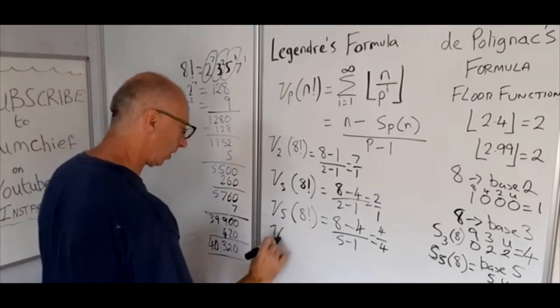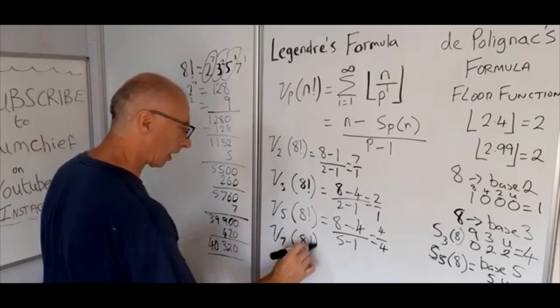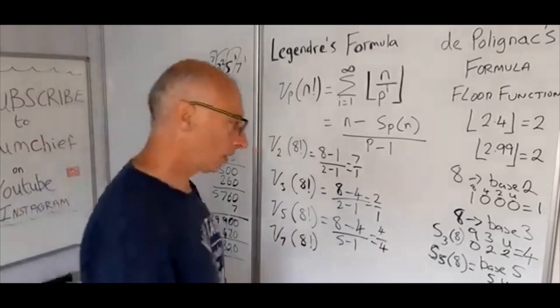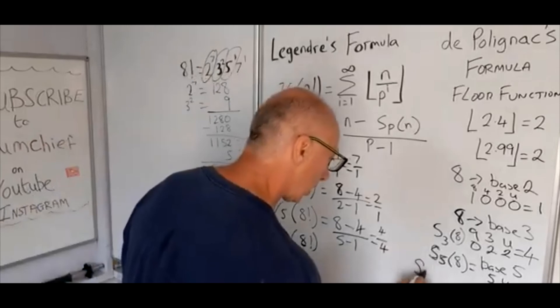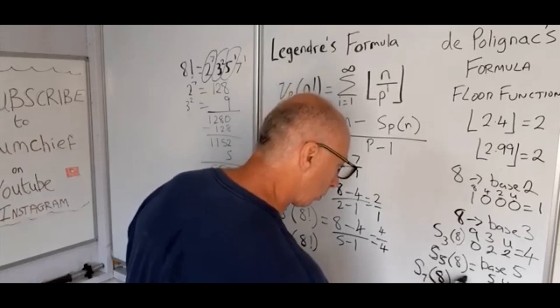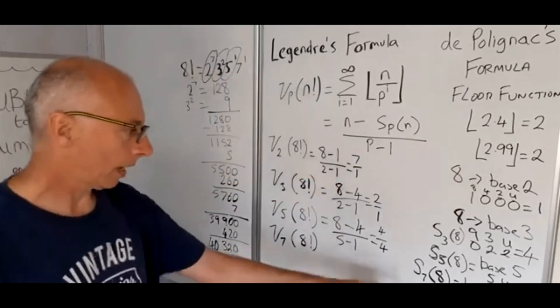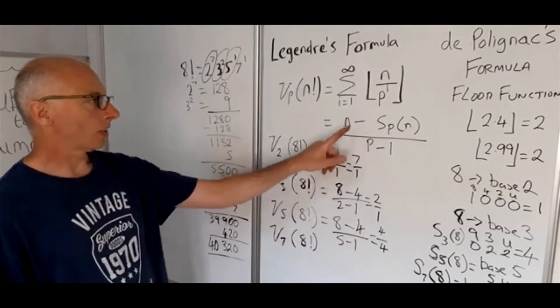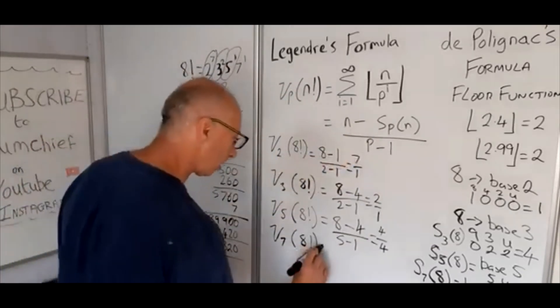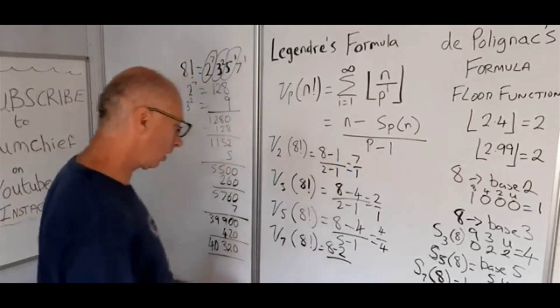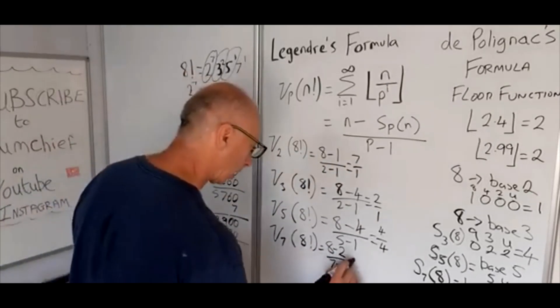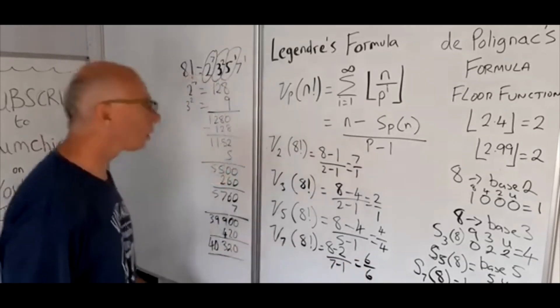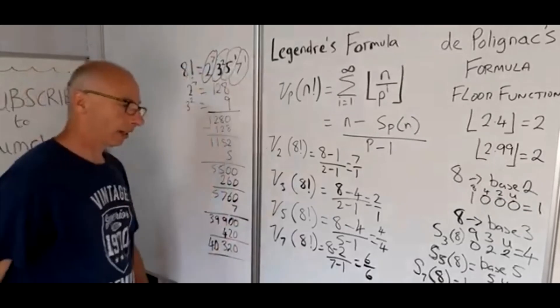And let's just try again for the last one. P-adic formula for 7, 8 factorial. So s base 7 of 8. So base 7, 7 and units. So 8 is just going to be 1 seven and 1 unit, so that equals 2. So that's going to give us 8 minus 2 over 7 minus 1. And look, that gives us 6 over 6, which is 1. Okay, we're going to go in and turn it off to check. That works.